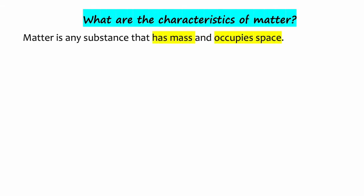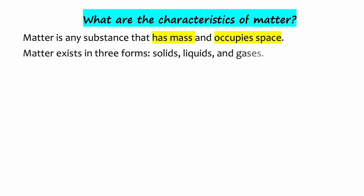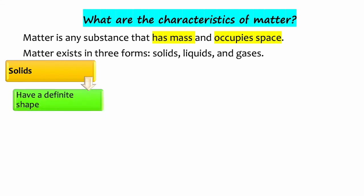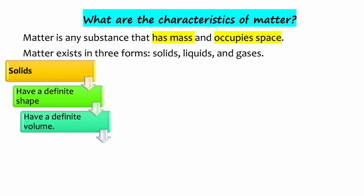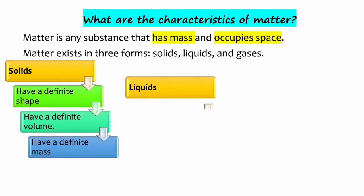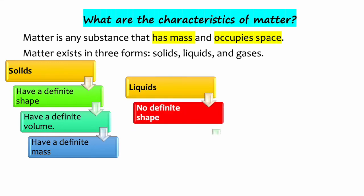Matter exists in three forms: solids, liquids, and gases. The following are the characteristics of solids: solids have a definite shape, they have a definite volume, and solids also have a definite mass.